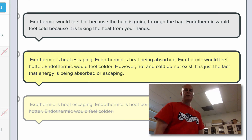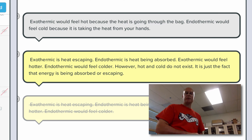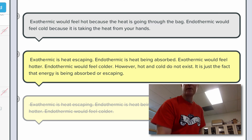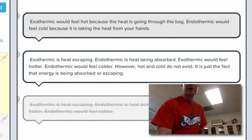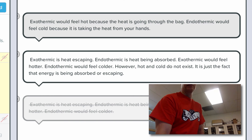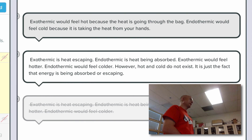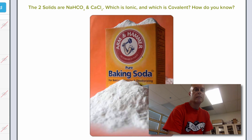One answer says: exothermic is heat escaping, endothermic is heat being absorbed. Exothermic would feel hotter, endothermic would feel colder. However, hot and cold do not exist — it's just the fact that energy is being absorbed or escaping. That's an awesome answer.